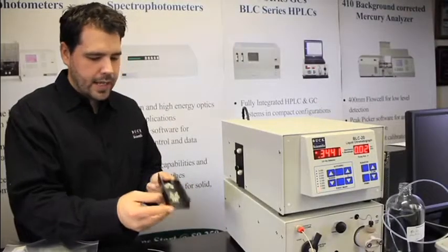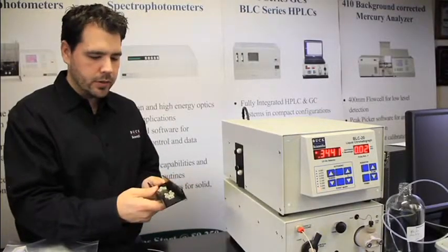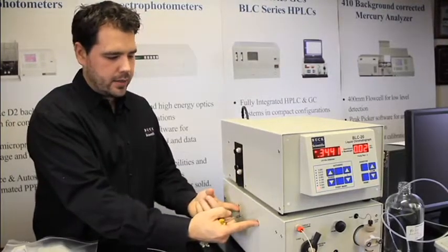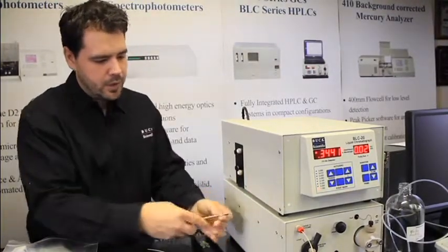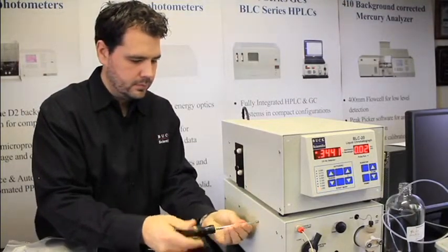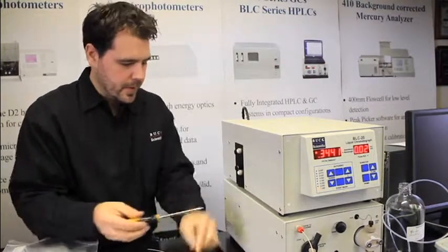We're going to attach the HPLC column holder next. There will be two screws on the side of the pump chassis. Remove the two screws with the Phillips head screwdriver and set them aside.